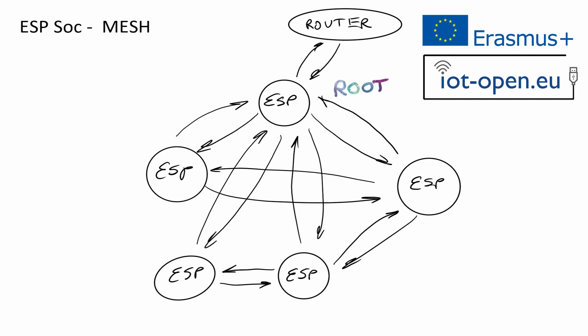A leaf node can only send data to the parent node and cannot receive data from child nodes. A parent node can communicate with other nodes as a router node. Only one node is the root node, and it is the one allowed to communicate with the external network.